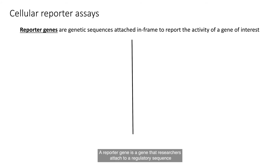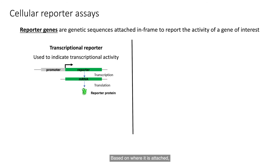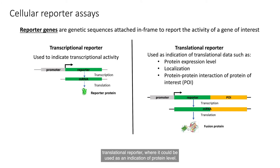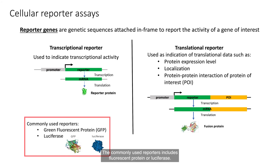A reporter gene is a gene that researchers attach to a regulatory sequence or in-frame to the coding sequence of another gene of interest in cells. Based on where it is attached, it could be in the format of a transcriptional reporter, used as an indication of whether certain genes are expressed or a signaling pathway transcription factor is activated. Or it could be in the format of a translational reporter, used as an indication of protein level, cellular localization, and protein-protein interaction of a protein of interest.